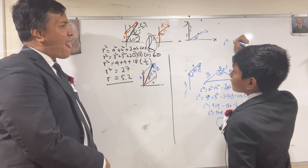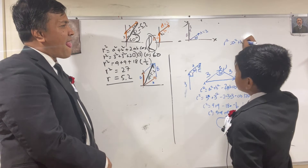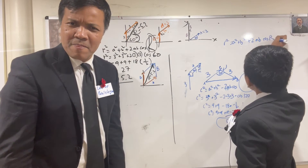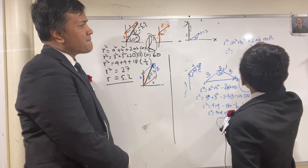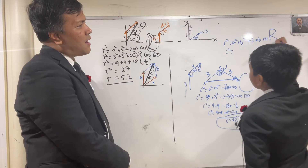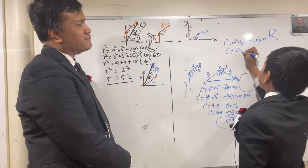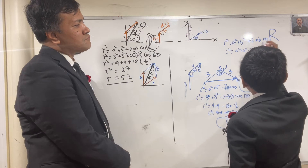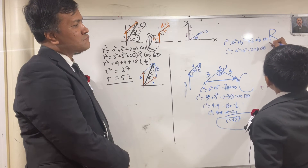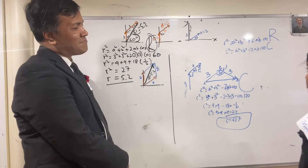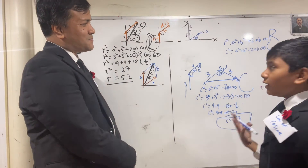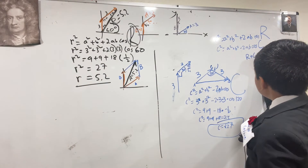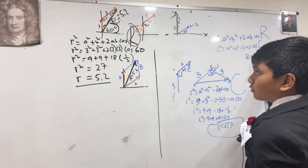We have R squared equals A squared plus B squared plus 2AB cosine R. And C squared equals A squared plus B squared minus 2AB cosine C. Now, what is the difference between R and C? R plus C is equal to 180.